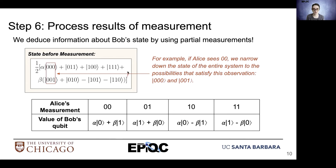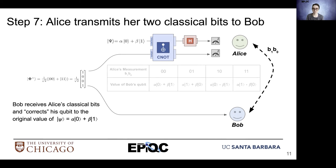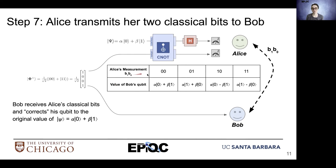We can see that by looking at our state and the properties of that particular basis state for the case where Alice's qubits are in state one one. After measurement, Alice transmits her two classical bits to Bob. Bob receives those classical bits and has to correct the state of his qubit in order to recover the original state of psi, which is alpha ket zero plus beta ket one.